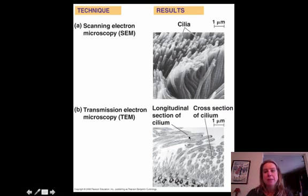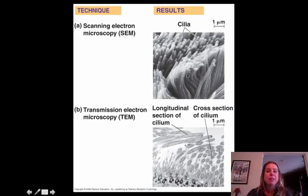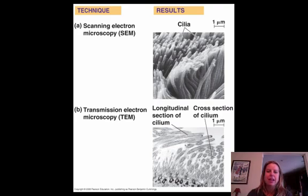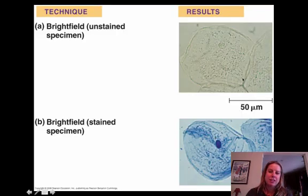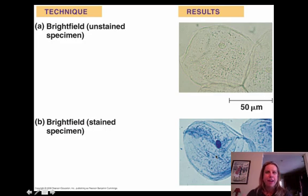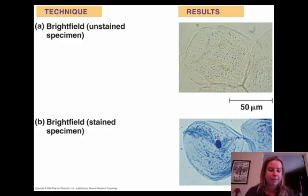Now, these are going to be pictures of cilia — those finger-like projections inside your intestines and lungs. You can see that these are both cilia, but taken with different types of microscopes. Up here is a scanning electron microscope, where it bounces electrons off and you can see a three-dimensional image of what those cilia look like. Down here is a transmission electron microscope, where it passes electrons through the specimen and you can see what the inside of those cilia actually look like. Here is a better example of staining — up here is an unstained cheek cell, and down here is one that has been stained.